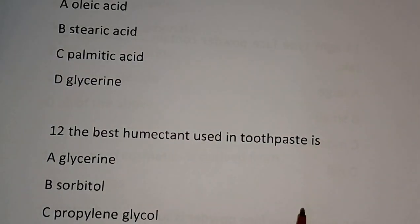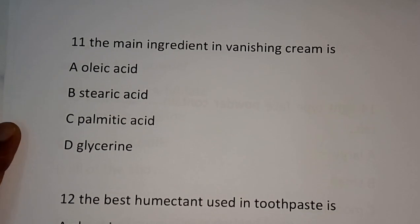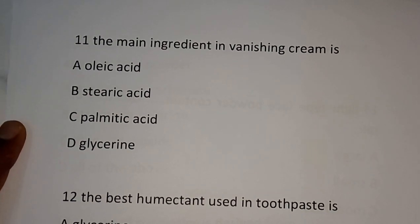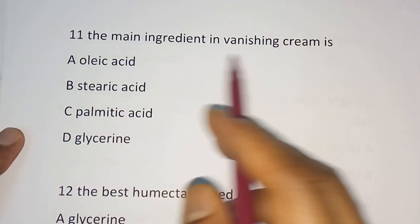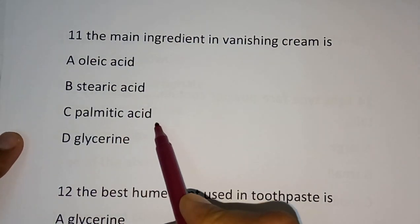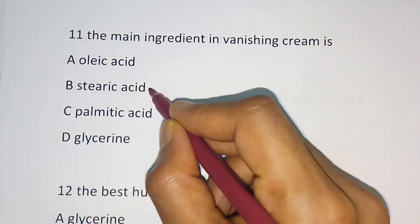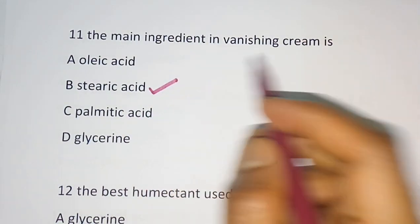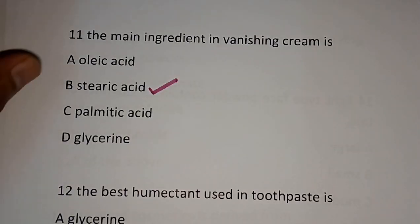Question number 11: The main ingredient in vanishing cream — Oleic acid, Stearic acid, Palmitic acid, or Glycerin? Stearic acid is the main ingredient in vanishing cream.